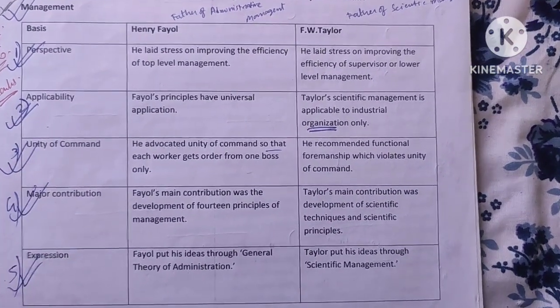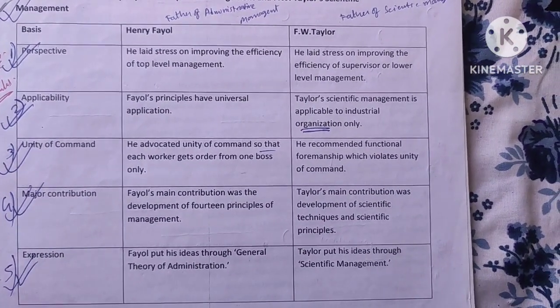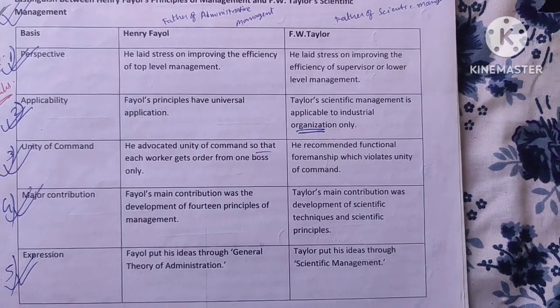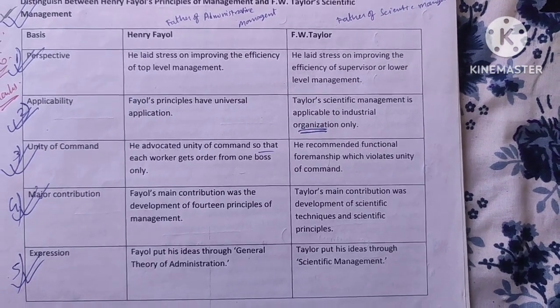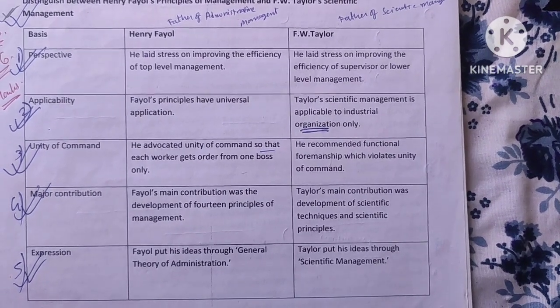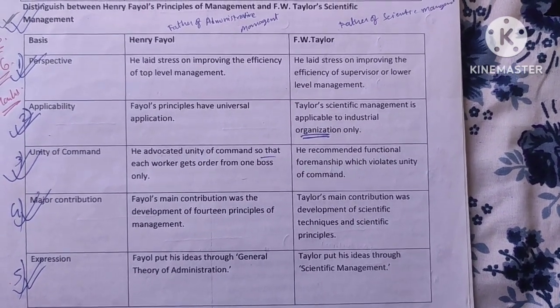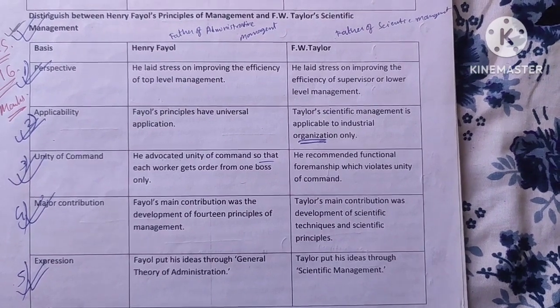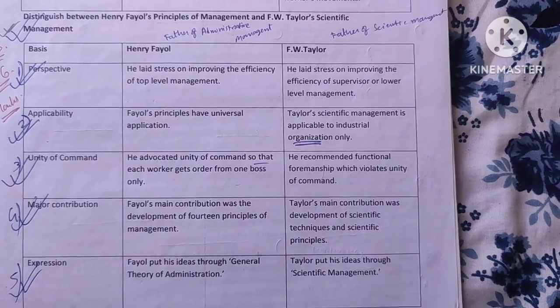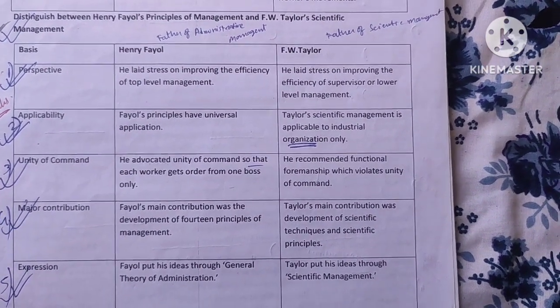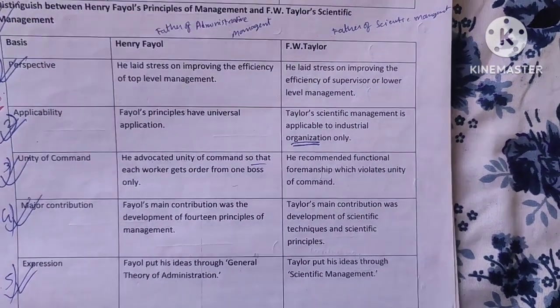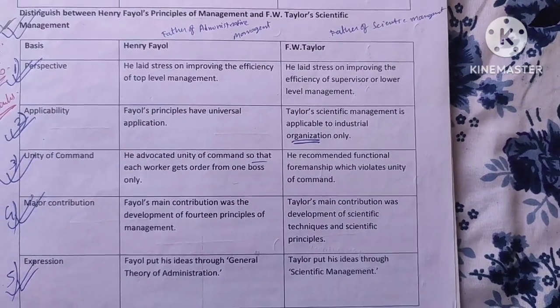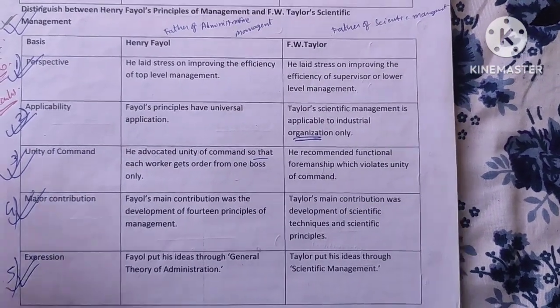Number 3 is Unity of Command. Fayol advocated unity of command so that each worker gets orders from one boss only. Taylor recommended Functional Foremanship, which violates unity of command.